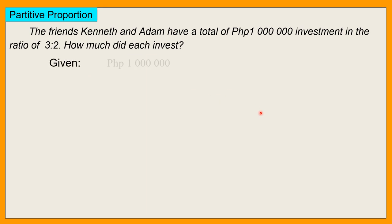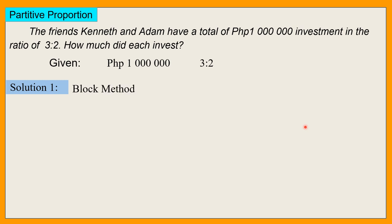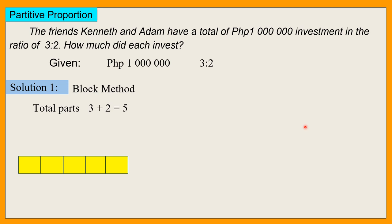Given natin is 1 million pesos, this is the total investment nilang dalawa, at yung ratio nila is 3 is to 2 — 3 parts for Kenneth, 2 parts for Adam. Solution: block method — add natin yung total number of parts: 3 plus 2 equals 5. So 5 blocks. At yung total ng blocks na ito ay 1 million. So yung 1 million natin hatiin natin sa 5 blocks — 1 million divided by 5 — and that is equal to 200,000. So bawat block ay 200,000.